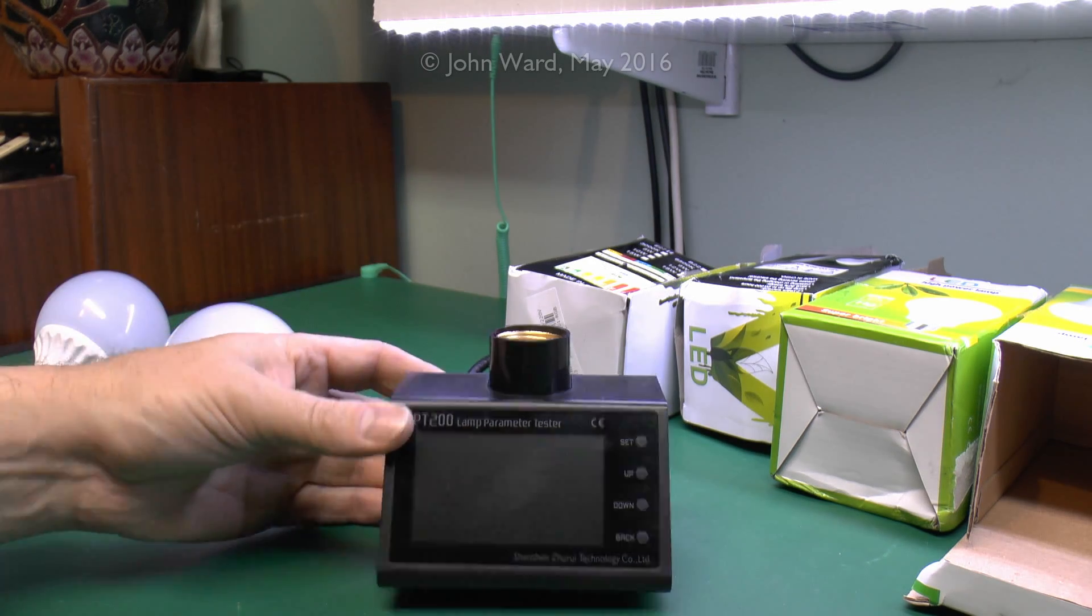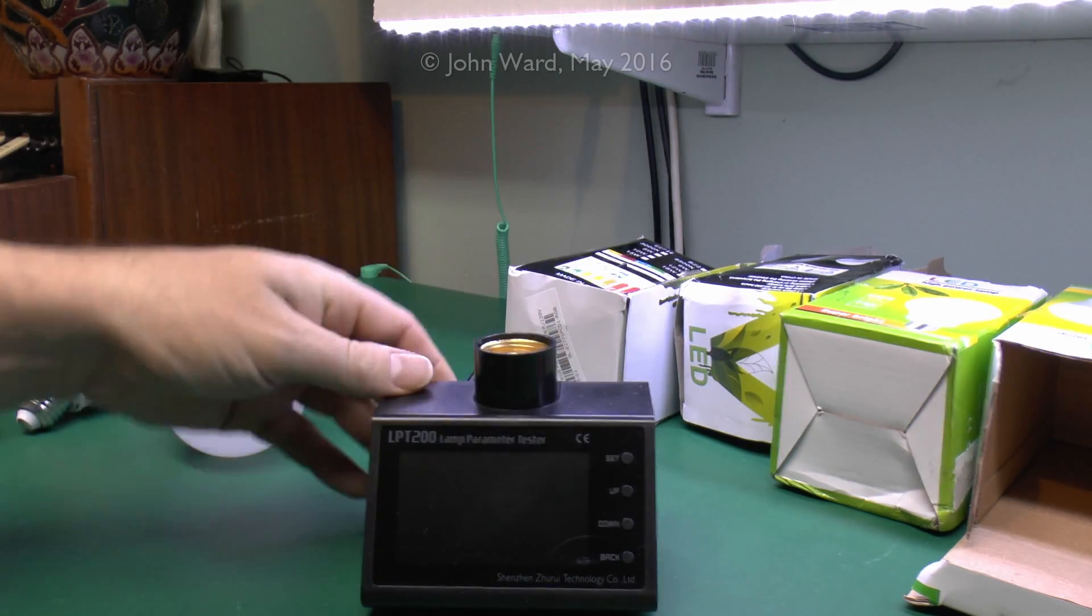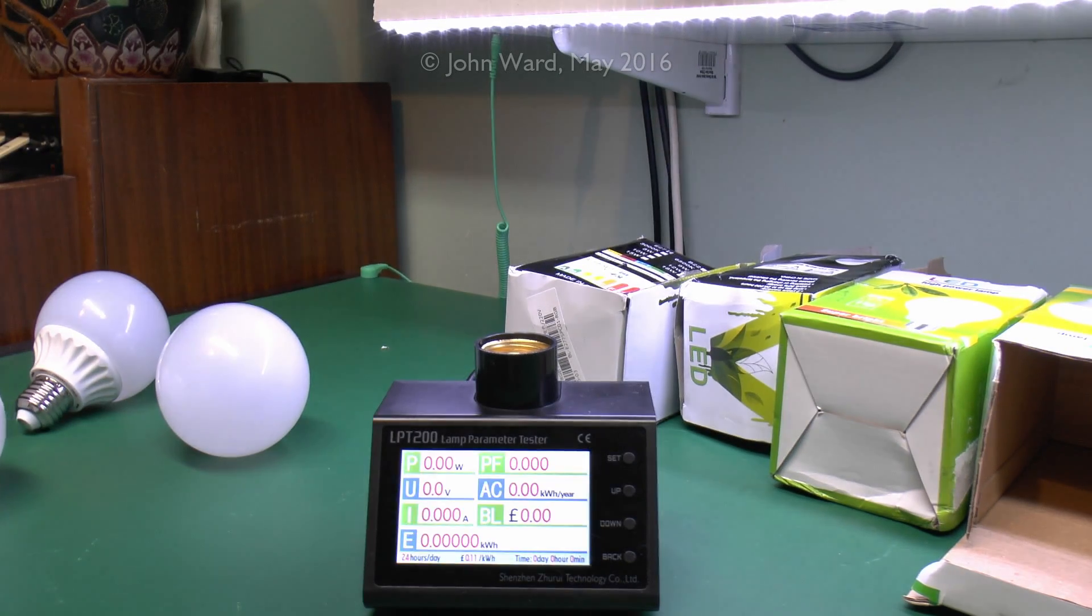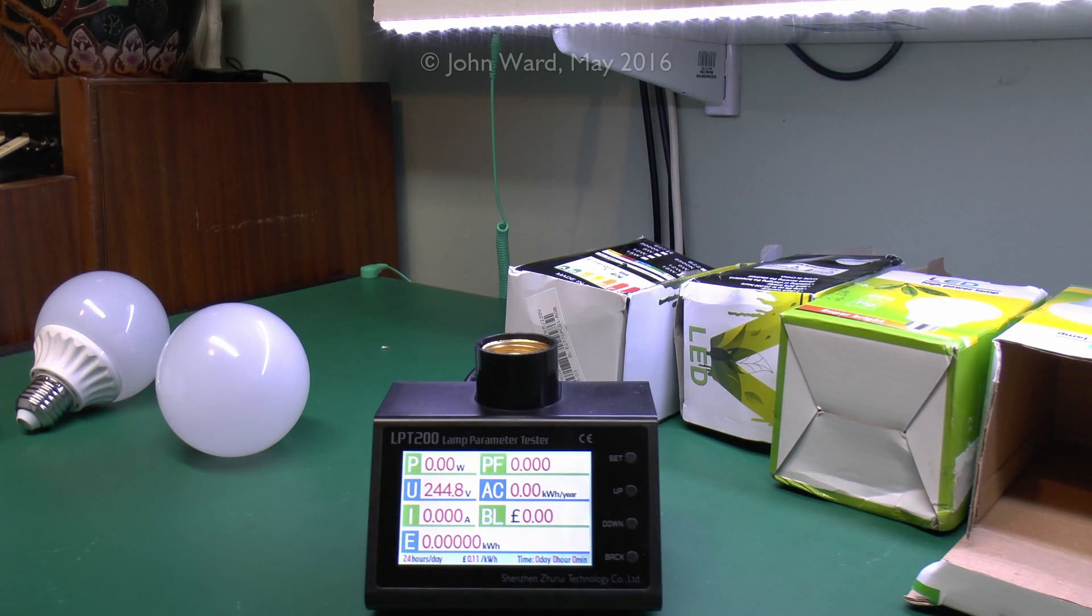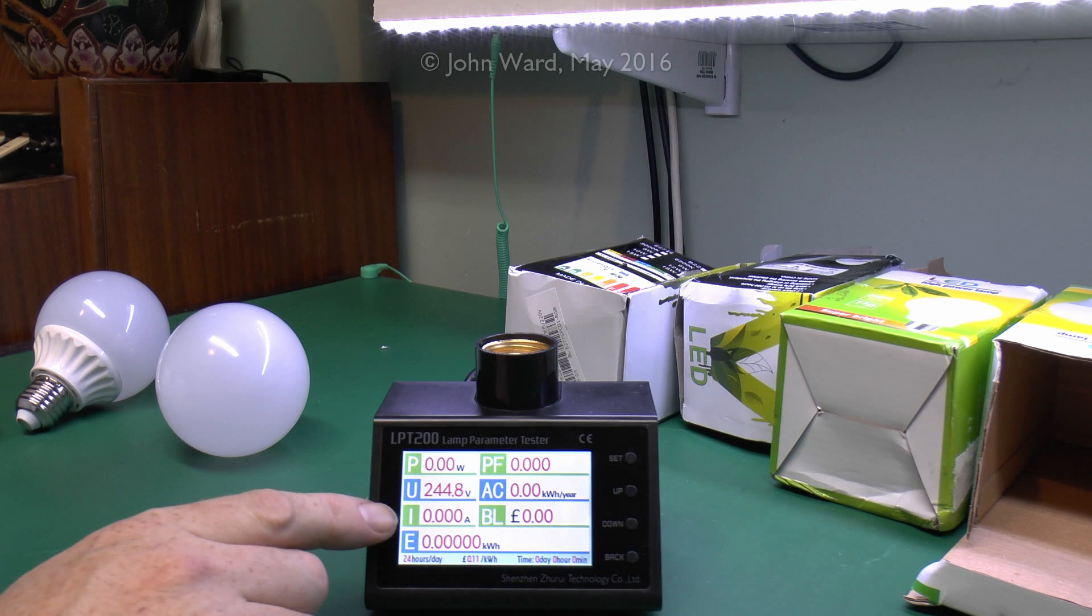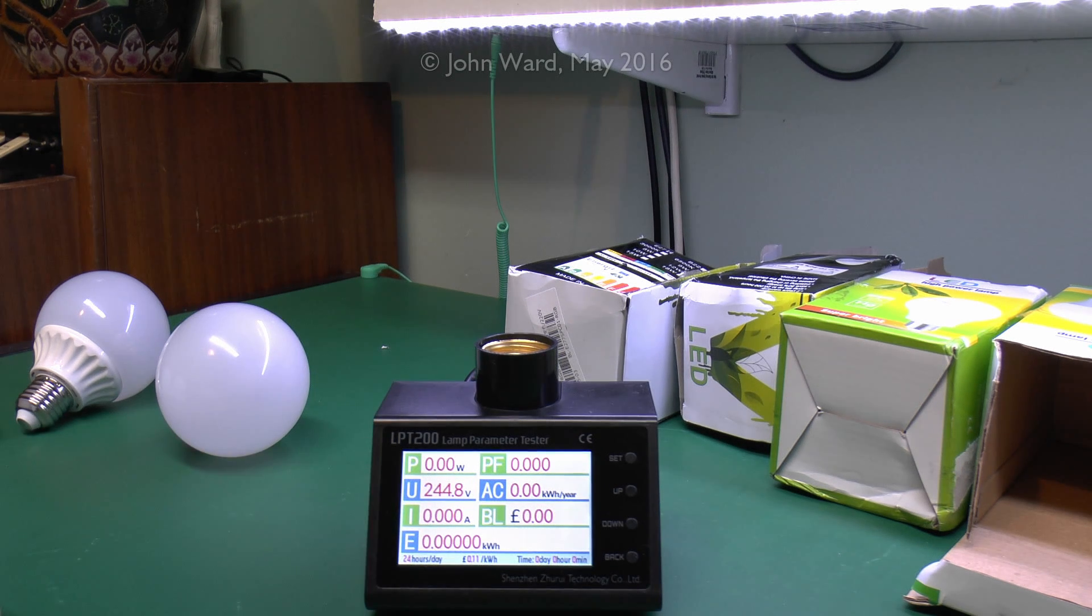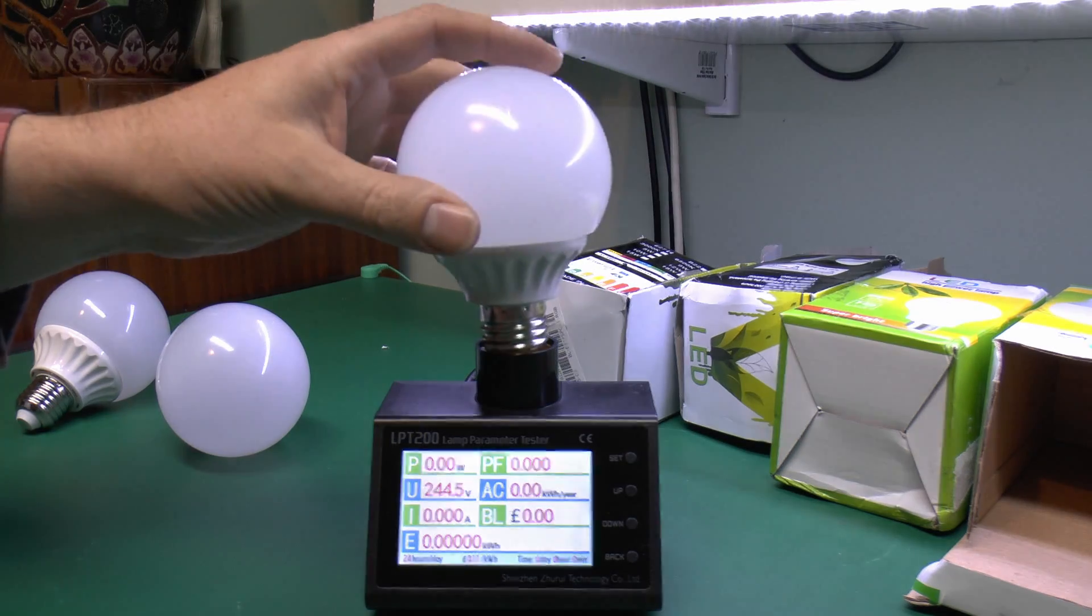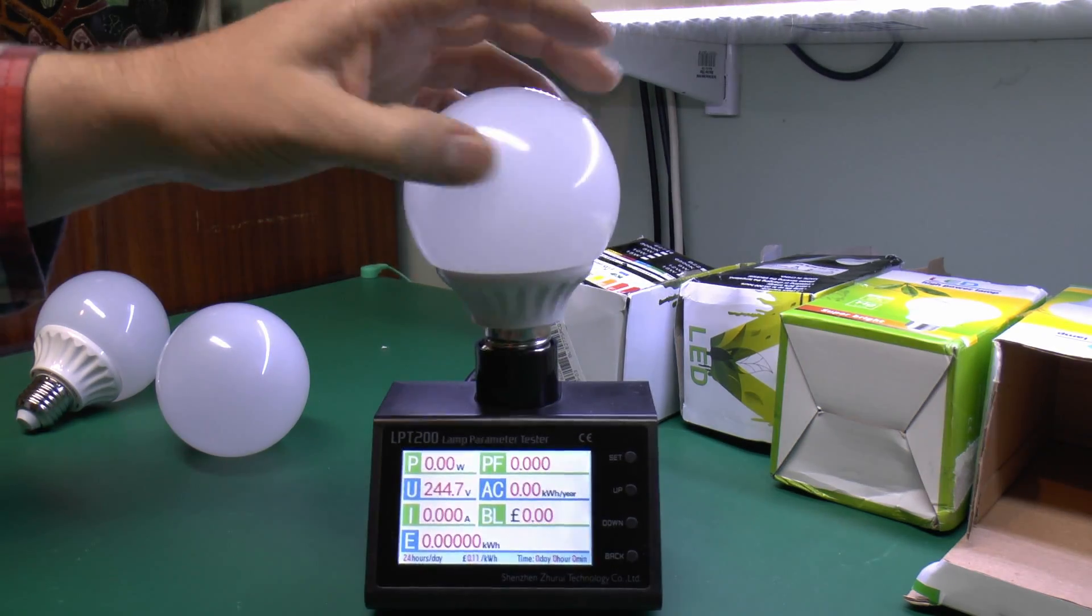To test these we'll use this device which we've seen in other videos - it's designed for this with the lamp holder on top. The case of interest is the actual power it's going to use and the current, shown down here. Voltage is about 244 or just under 245. Bearing in mind these were sold as 5 watt versions, I doubt they're going to be 5 watts, but it doesn't matter as long as they light up and do their colour changing thing.